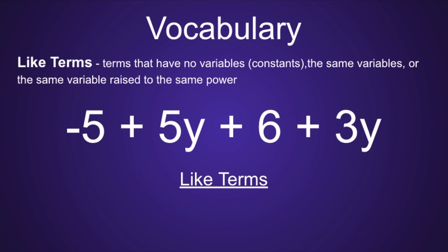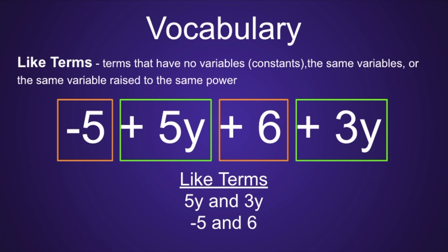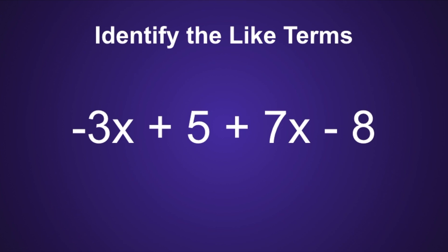Now let's take a look at like terms. Like terms are terms that have no variables — these are called constants — the same variables, or the same variable raised to the same power. In the expression negative 5 plus 5y plus 6 plus 3y, the like terms would be 5y and 3y, because they both have the variable y, and negative 5 and positive 6.